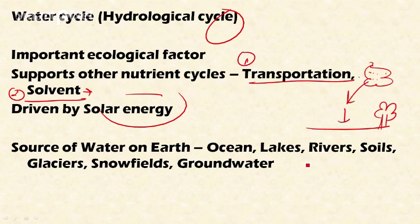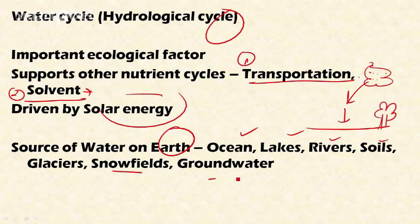This cycle continues with support from solar energy. The sources of water on Earth include oceans, lakes, rivers, soil, glaciers, snowfields, and groundwater — these are all important sources of water on Earth.